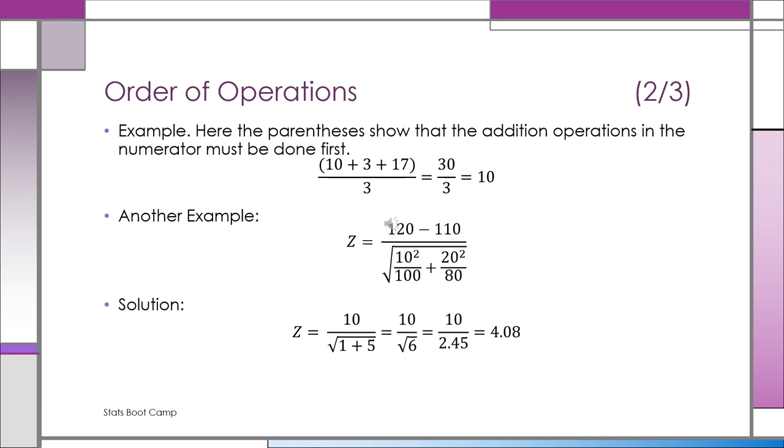How are we going to do that? Well, first we have to say, okay, the numerator gets done first. Imagine it was in parentheses. 120 minus 110 gives you 10. And then in the denominator, we have 10 squared over 100. That's the first fraction. The 10 squared gets done first. We take that 10 squared, which is 100, divide by 100. That gives us 1. The other fraction, we still didn't do the square root because we have to do the other fraction first. We have to do everything under the square root first.